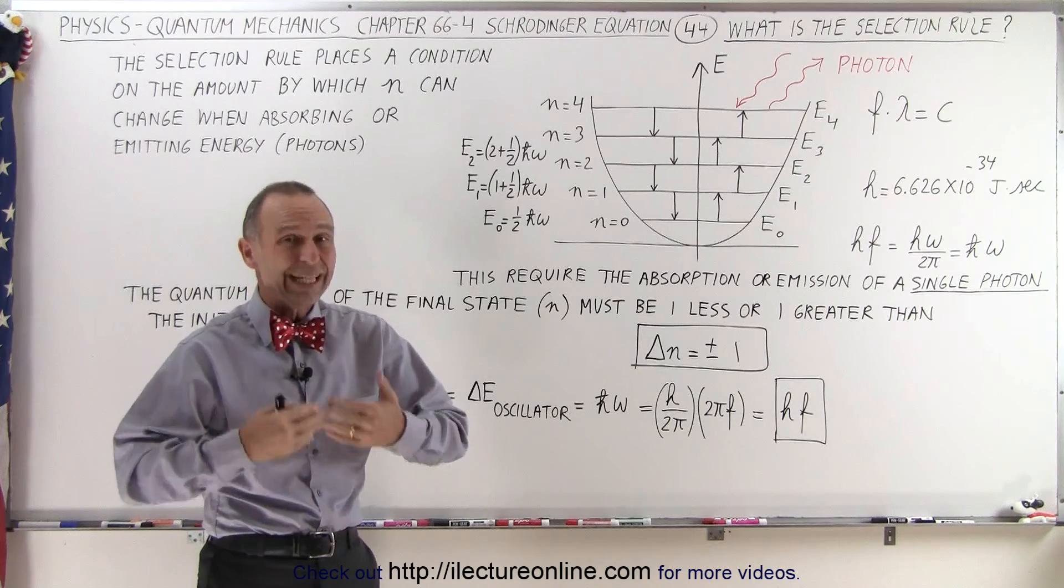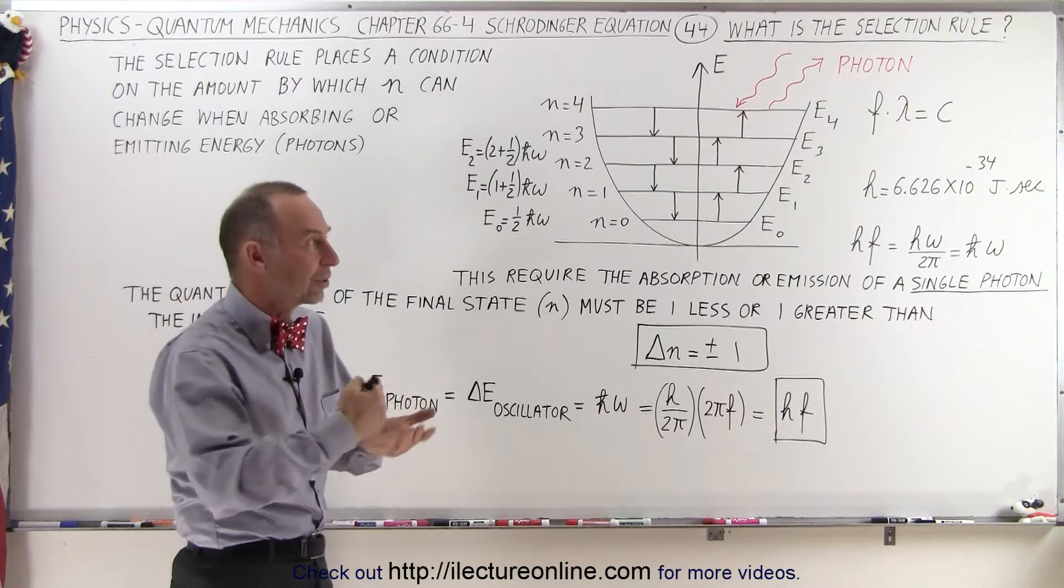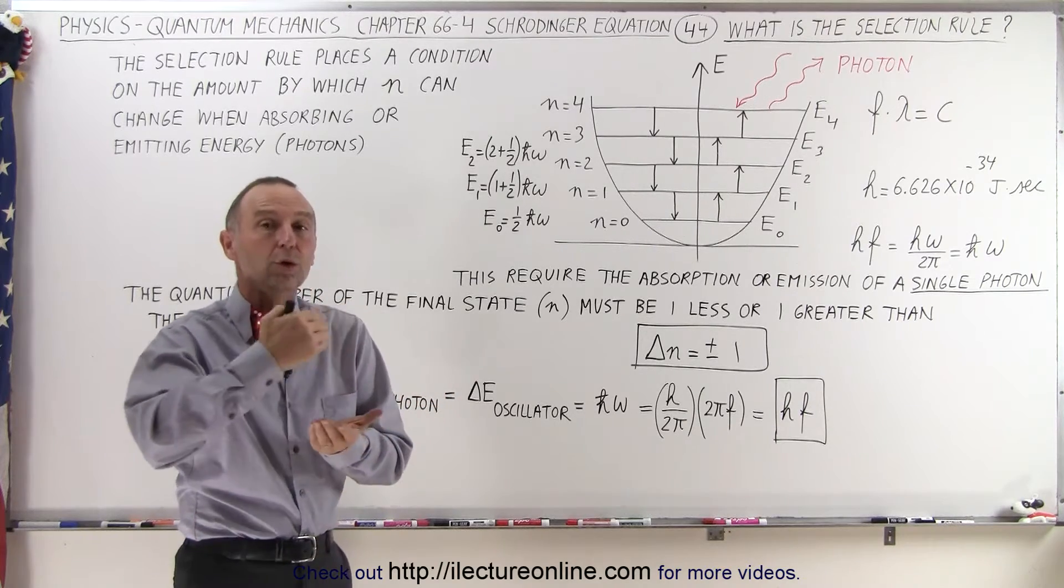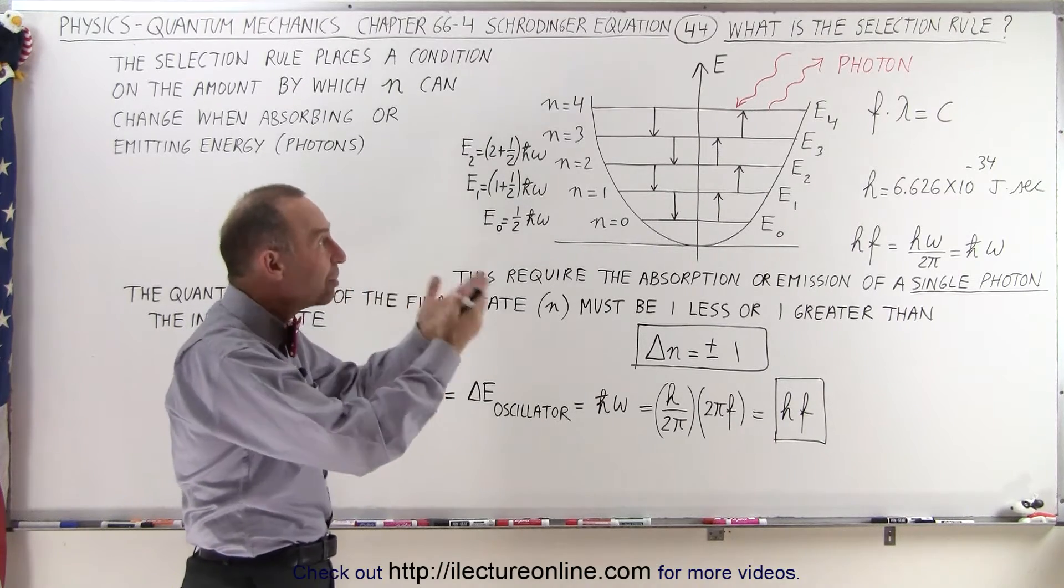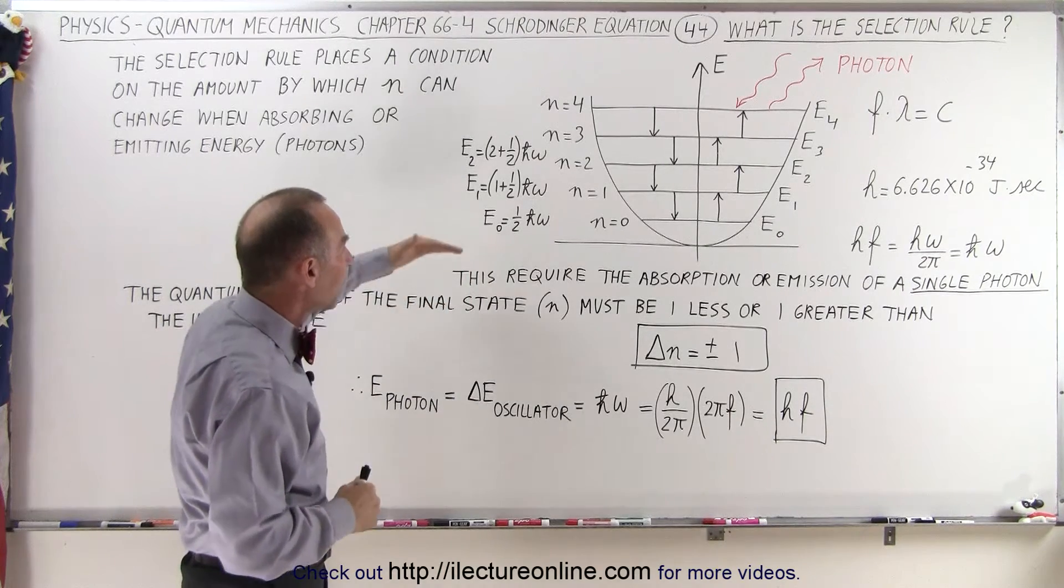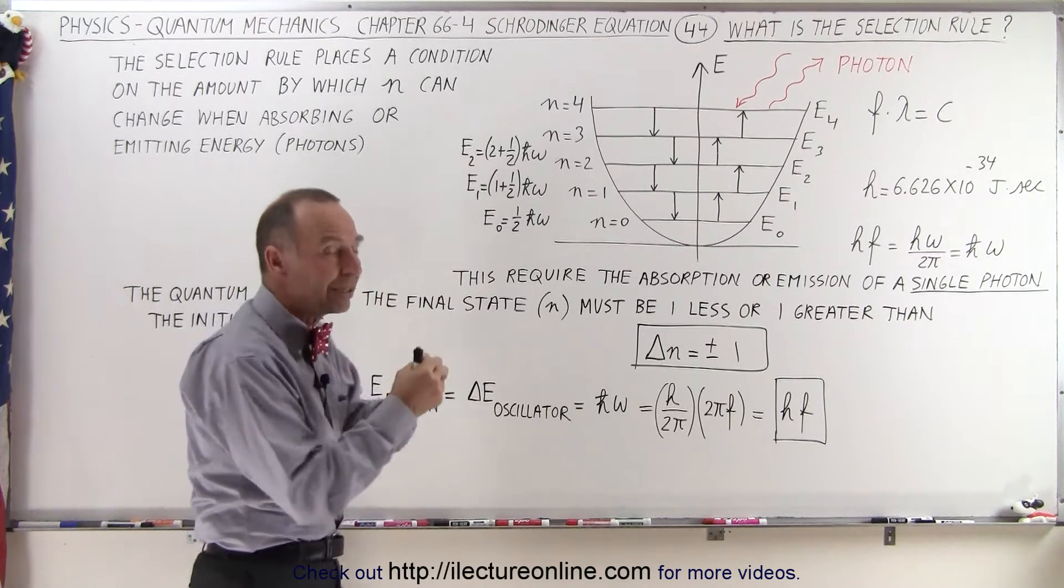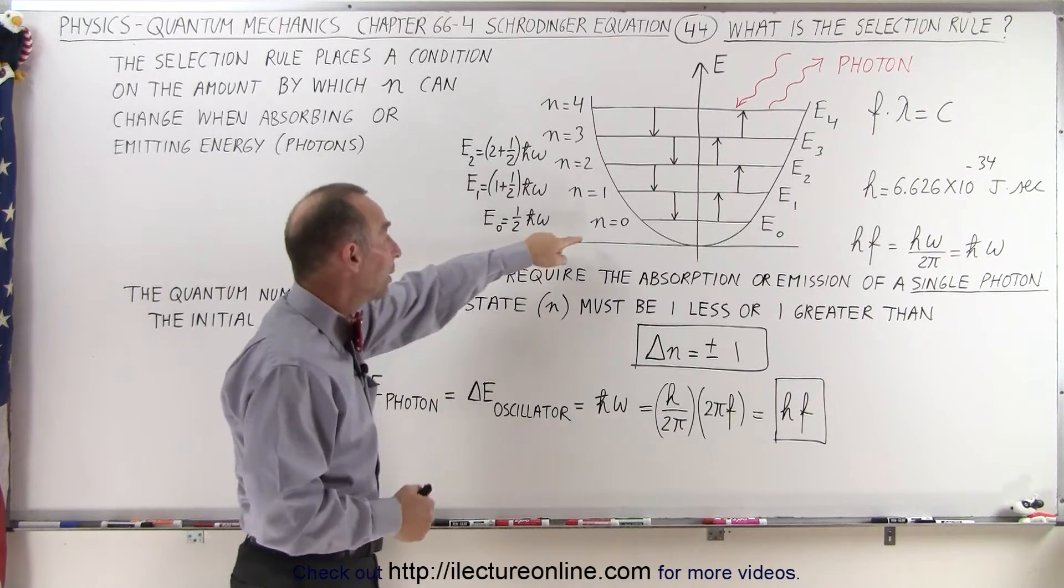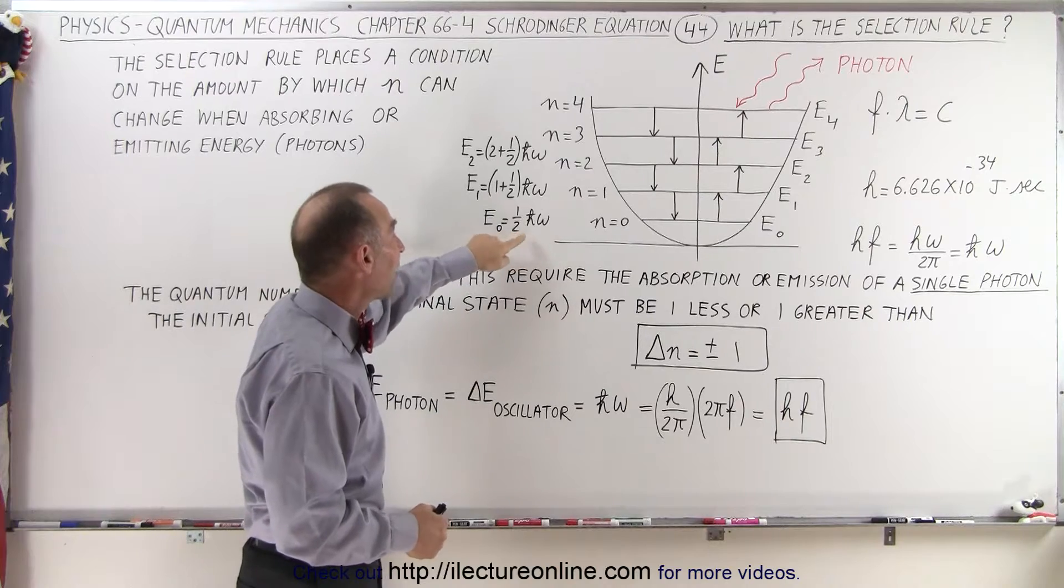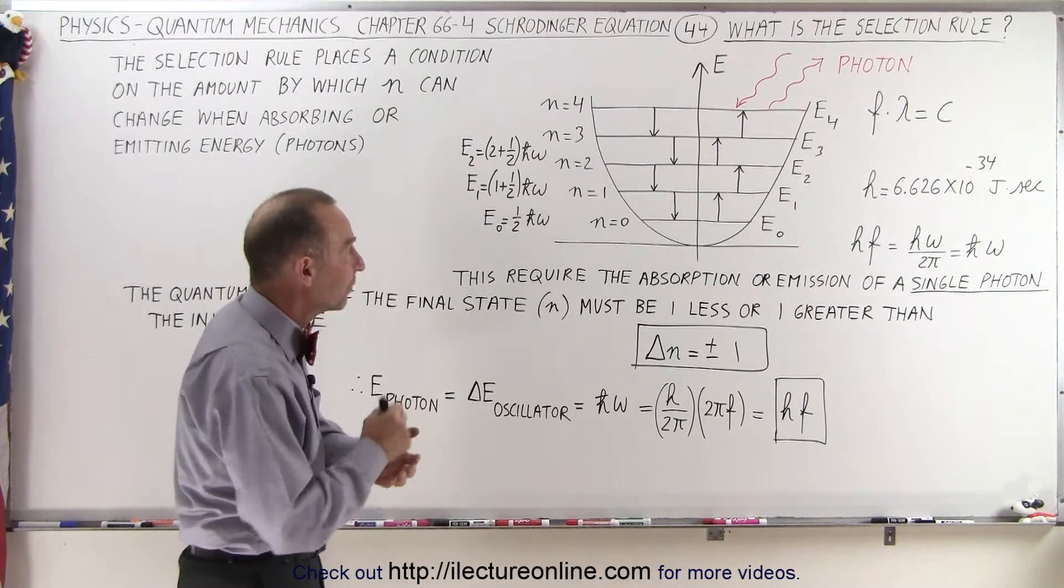You may ask, what is the selection rule? We realize that the quantum mechanical oscillator can either gain or lose energy by the emission or absorption of photons. The bottom level, E₀, the lowest energy level that an oscillator can be at, is not equal to zero, but it's ½ℏω, omega being the angular frequency of the oscillation.